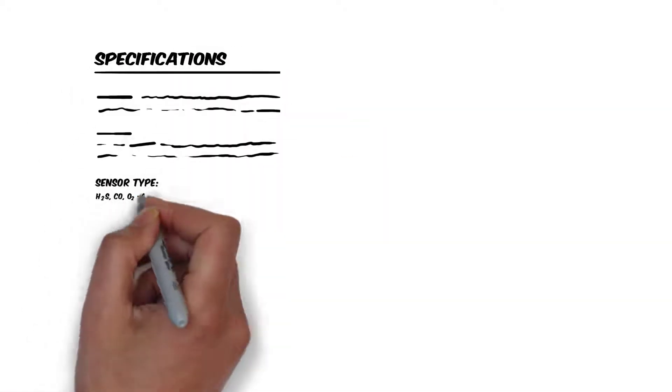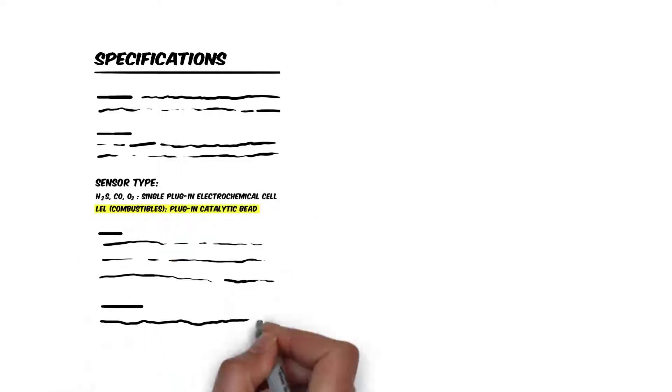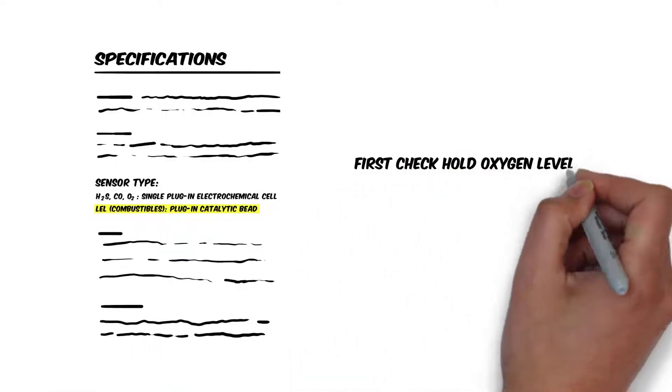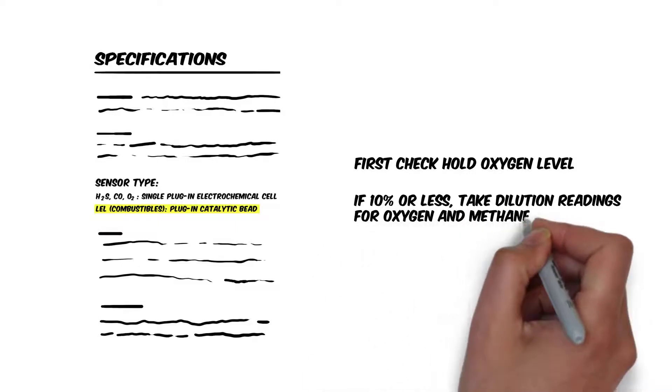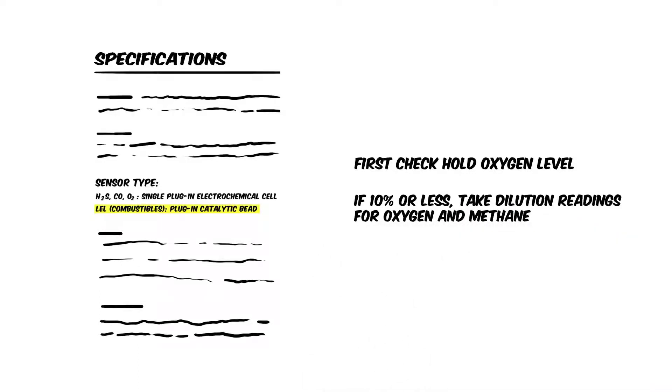If your meter has a catalytic sensor fitted, you must check the hold oxygen level. If this is 10% or less, then it is necessary to take dilution readings for oxygen and methane.